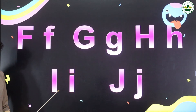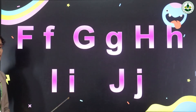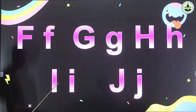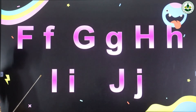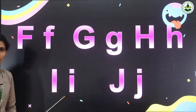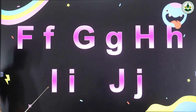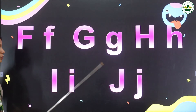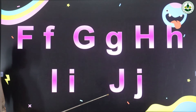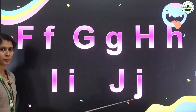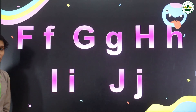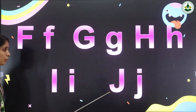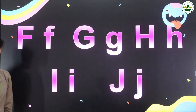Very good. It is I. Capital I and small letter I. Letter I has capital I and small letter I. Then can you say the phonics sound of letter I? It is E. The sound of letter I is E. Then letter I after — letter J. Capital J and small letter J. Then the sound of letter J is J.